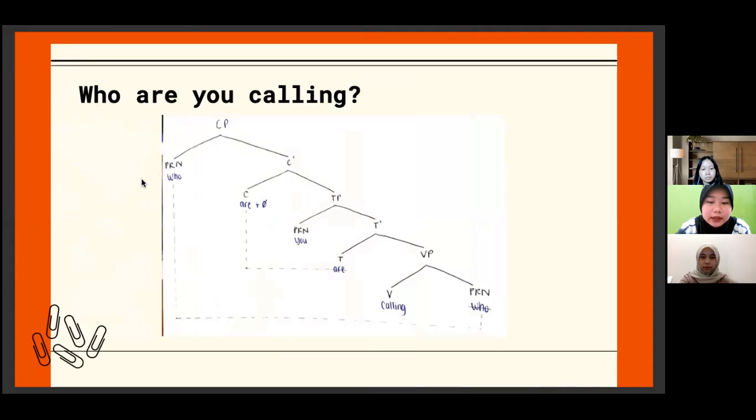First, 'who' is a pronoun as a complement of the verb and has moved into the front part of the overall clause as the specifier of CP.